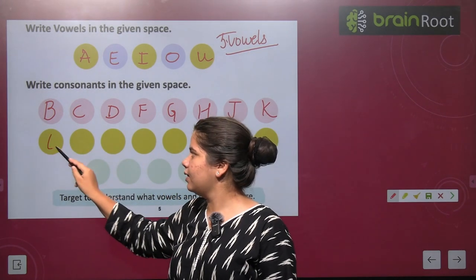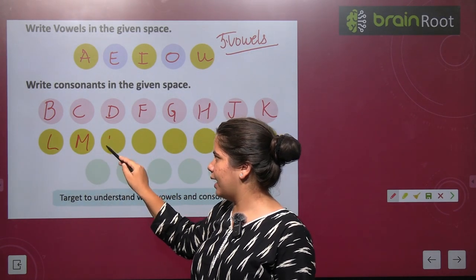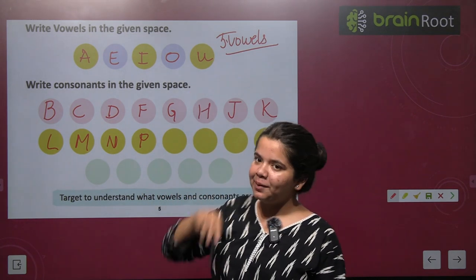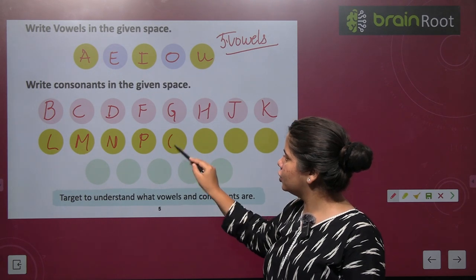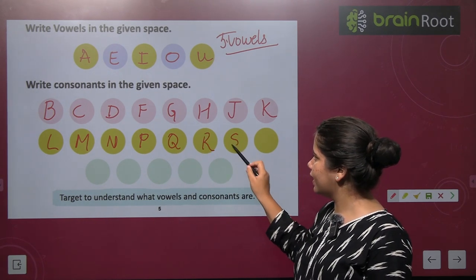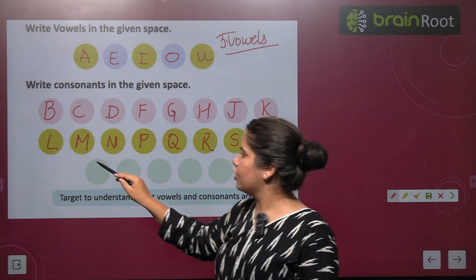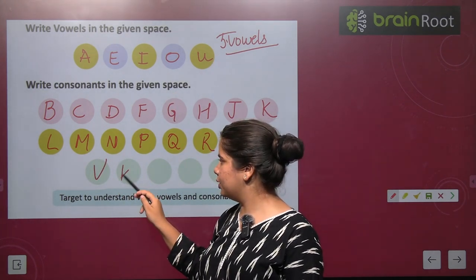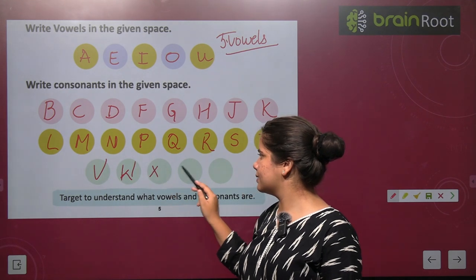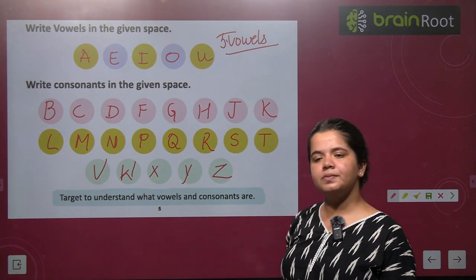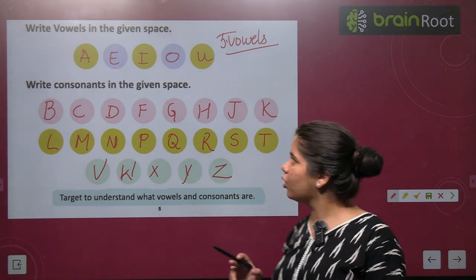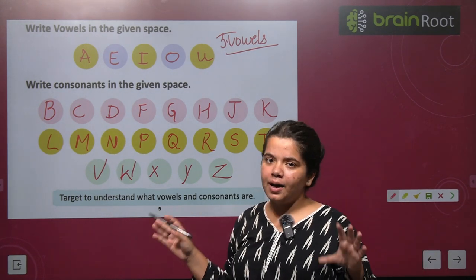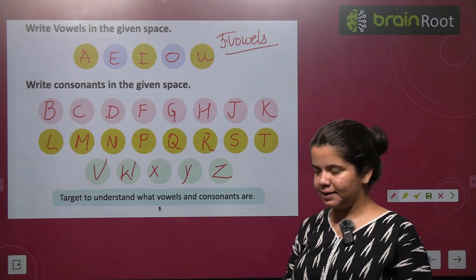K, L, M, N — where did O go? O is a vowel, right? Then Q, R, S, T — U is not there, U is a vowel. V, W, X, Y, Z. Okay? So we have written all these consonants and vowels properly in the given spaces. Please read them carefully.